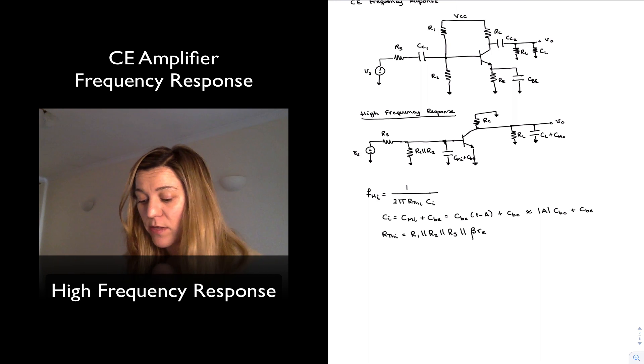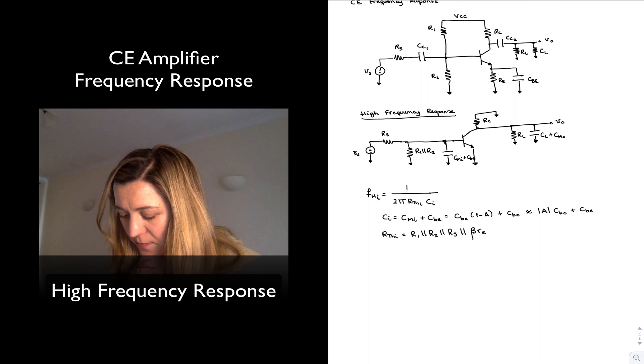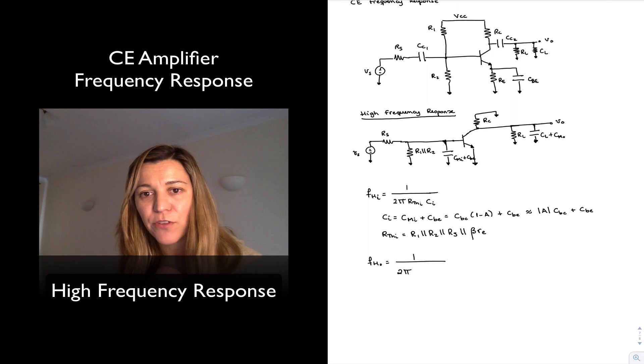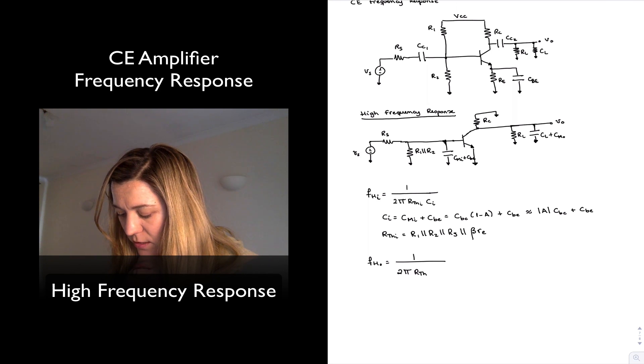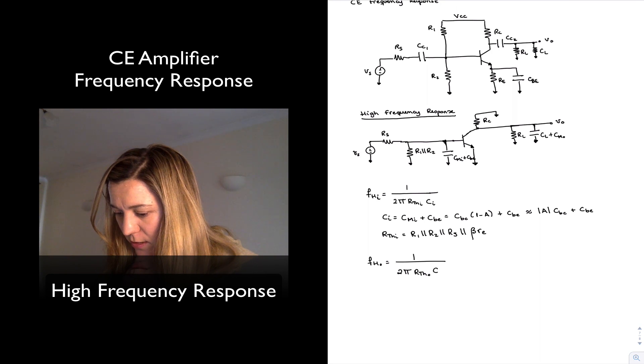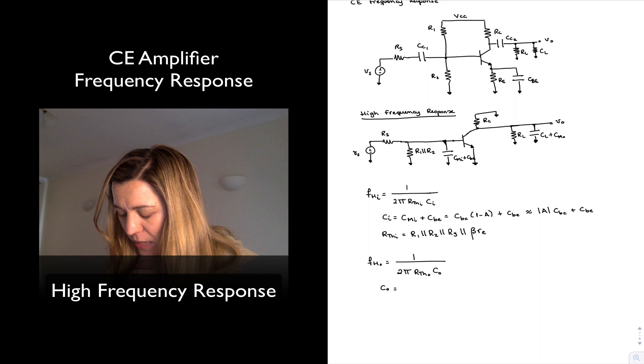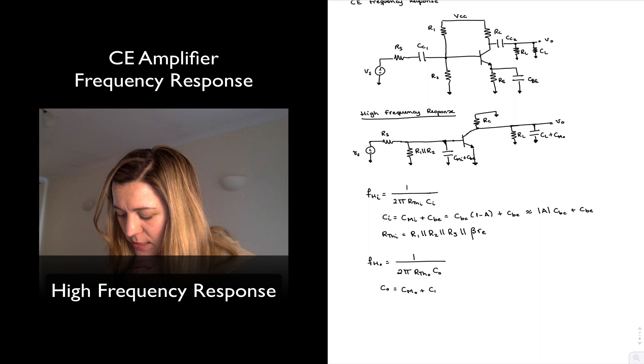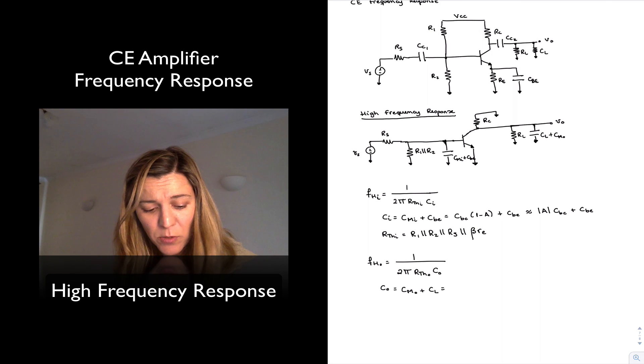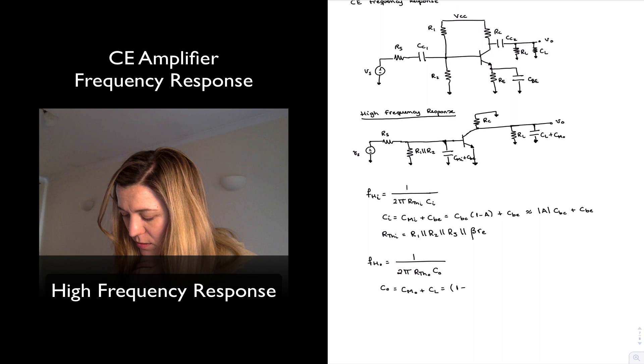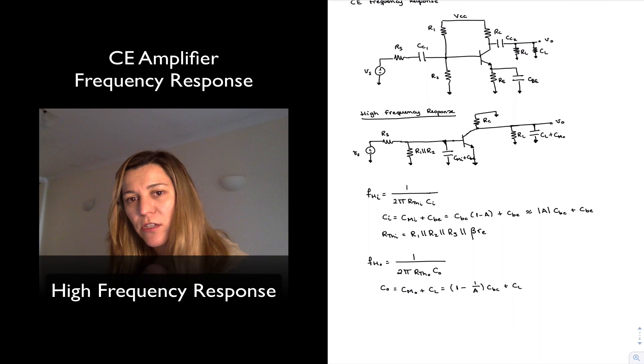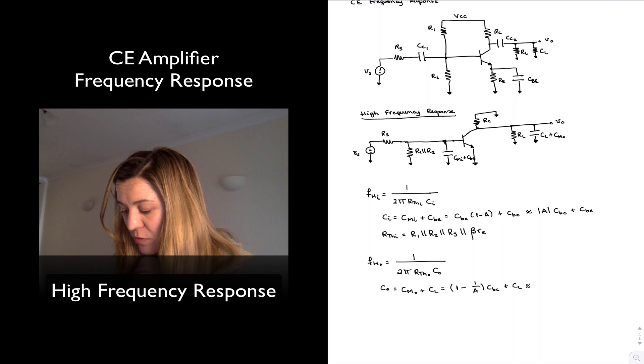So that will give me a value for high-cutoff-frequency FHI. On the other side, I can reproduce that methodology for my output capacitance and come up with another high-cutoff-frequency to the output capacitance. 1 over 2 pi R7 seeing across the terminals of the output capacitance times the output capacitance. Where my output capacitance is the combination of the load capacitance and the Miller output capacitance in this case, so CMO plus CL. And CMO is going to be equal to 1 minus 1 over A times CBC plus CL. And again, since the gain is typically much larger than 1 for a common emitter amplifier, we can approximate this as CBC plus CL.